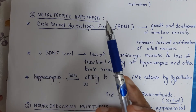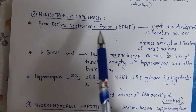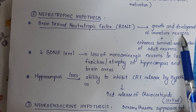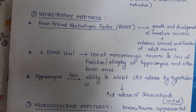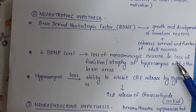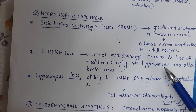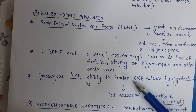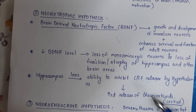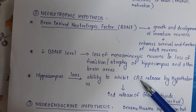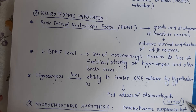To summarize the neurotrophic hypothesis: the main thing to remember is brain-derived neurotrophic factor. It supports the growth and development of immature neurons and the survival of mature ones. When it decreases, neurons are lost, functions are lost, size is affected, hippocampus is affected, and other brain areas are affected. The hippocampus loses the ability to inhibit CRF; CRF increases, glucocorticoids increase — and increased cortisol is a feature of depression.